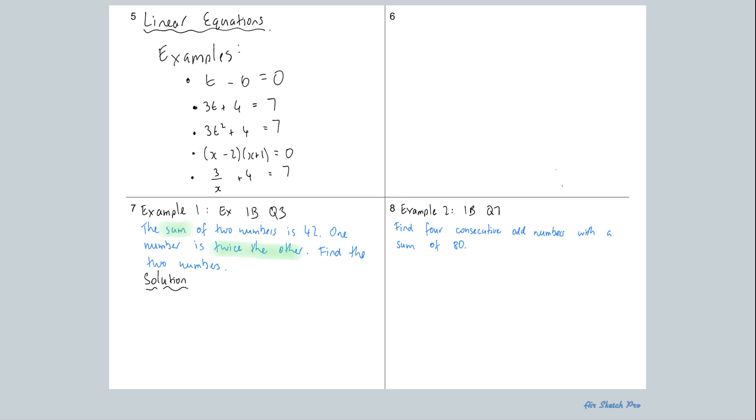So this is an example of a linear equation because t is raised to the power of 1. Same as here. This is an example where the equation is not linear because it's t squared. This one here, changing your variable, is also not a linear equation because if I expanded this, x times x would give me x squared. So just be mindful of that. If you can rewrite it so that it's got a squared term or higher, then it's not a linear equation.